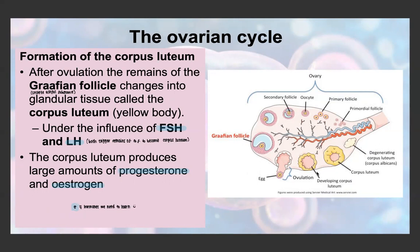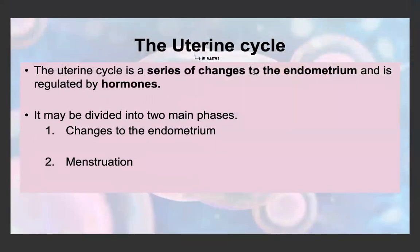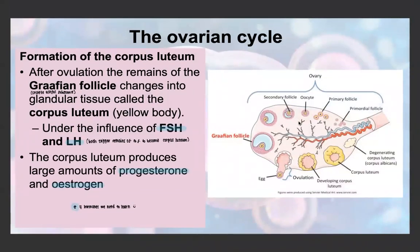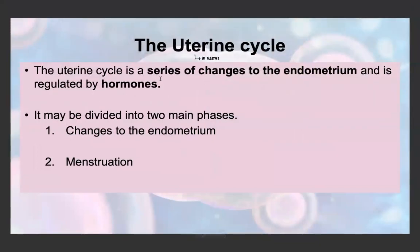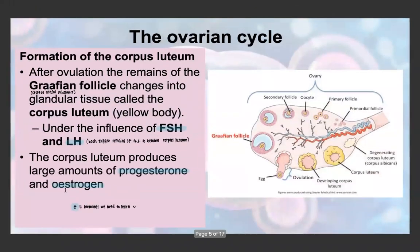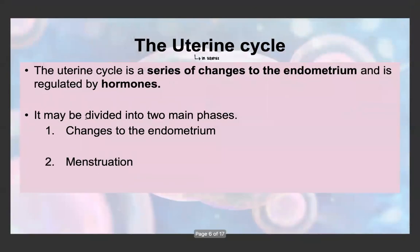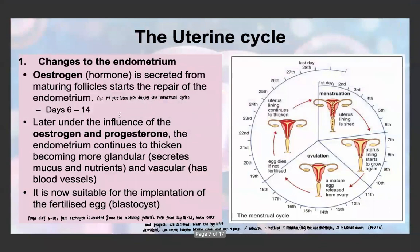Moving on to the uterine cycle, which occurs in the uterus — whereas the ovarian cycle focused on the ovary. The uterine cycle is a series of changes to the endometrium, which is the vascular wall of the uterus. It is regulated by the four hormones we discussed. It can be divided into two main phases: changes to the endometrium, and menstruation. Looking at changes to the endometrium, estrogen is secreted from the ovary by the maturing follicles, and it starts the repair of the endometrium.